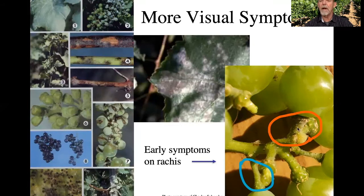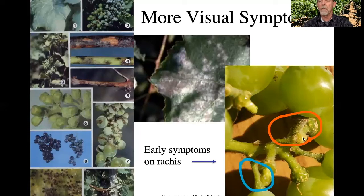On the right hand side is a picture courtesy of Charles Chambra at the Desert Farming Initiative, where he looked at the inner part of the cluster on the rachises of the berries and you can see these little bumps. These are powdery mildew infections that you would see well before any appearance on the leaves or on the berries.